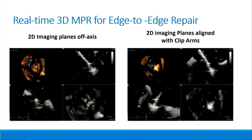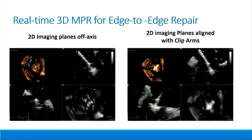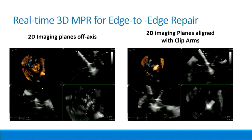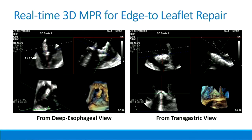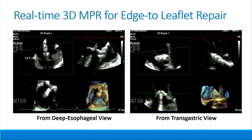Regarding quantification: when we have devices that sit in the middle of the orifice — these edge-to-edge repair devices — we will not be able to use all of the methods we have in the past, including PISA, to accurately quantify regurgitation. We will be relying on three-dimensional color Doppler imaging to directly planimeter the vena contracta area. This newest software iteration of the three-dimensional probes allows real-time 3D MPR, and this was used in an edge-to-edge repair to align off-axis images and better see the clip arms and the insertion of the thin leaflets into the clip.